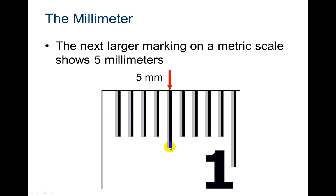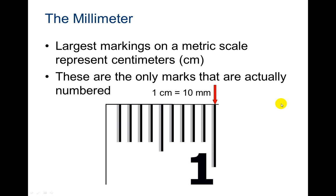This one here in the middle is just a little longer. It's for the five millimeters. It helps you in reading just so you know, oh, there's the five. And then you can start from here. You have to count all of these to figure out where the five is. So the largest markings on a metric scale represent centimeters. These are the only marks that are actually numbered.